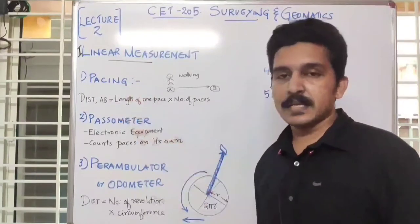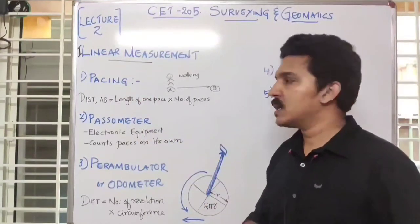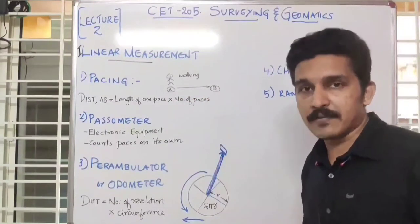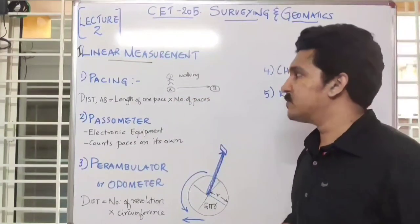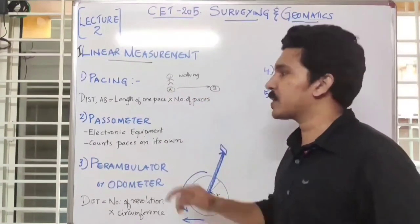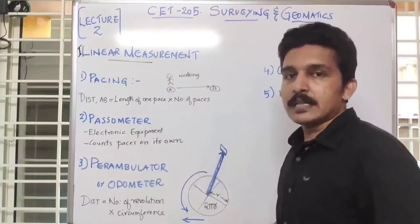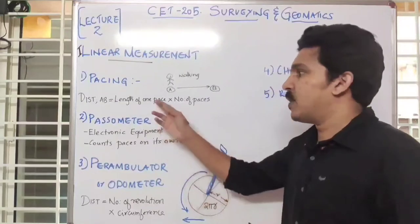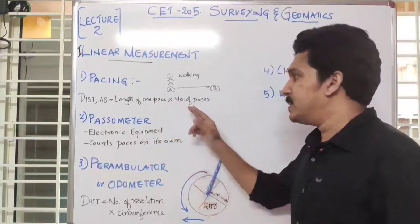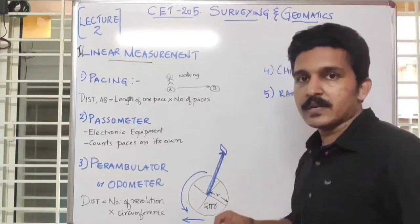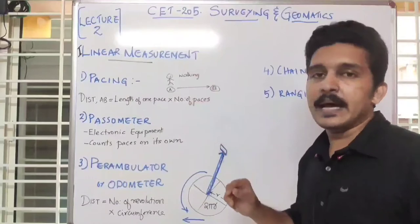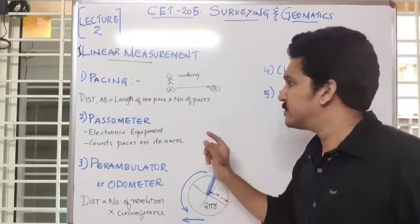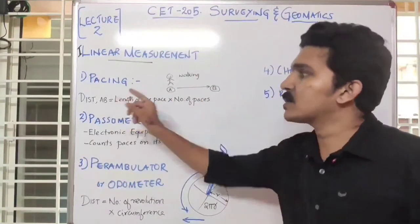The first method is pacing. What happens in pacing is, if we have to measure from point A to point B, a person starts walking from A to B. The distance A-B is given by the length of one pace multiplied by the number of paces. That is, if we know the number of paces and the length of one pace, we get the total distance A-B.